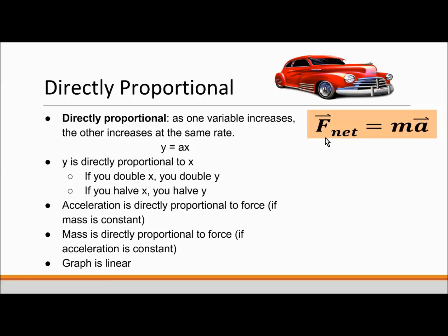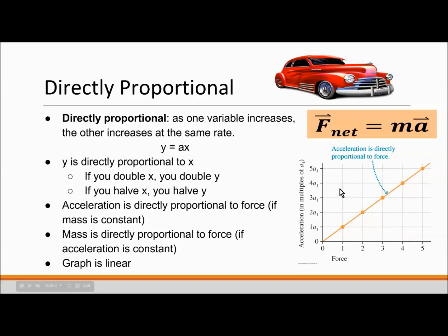If you graph two variables that are directly proportional, you will see that the graph is linear. Here is an example. If my force changes from 1 newton to 2 newtons, you see that my acceleration changes from 1 times its initial value, 1 times a1, to 2 times a1. And they increase in a linear relationship, which ends up graphing a line.